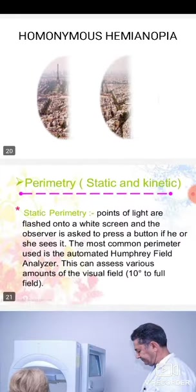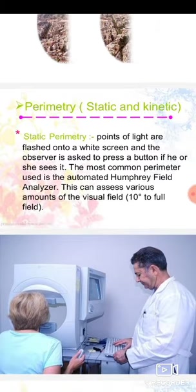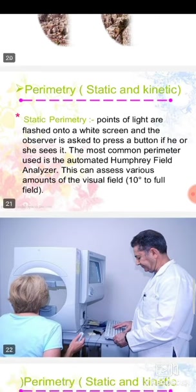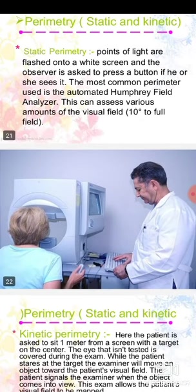Then there is the term perimetry, which can be static or kinetic. In static perimetry, points of light are flashed onto a white screen and the observer is asked to press a button if they see it. The most common perimeter used is the automated Humphrey field analyzer, which can assess various amounts of the visual field from 10 degrees to the full field.